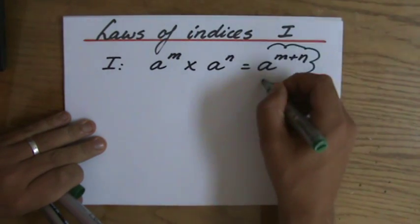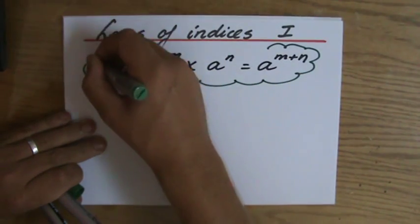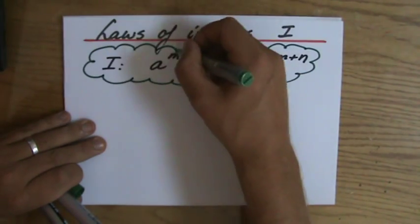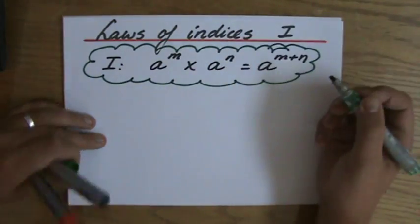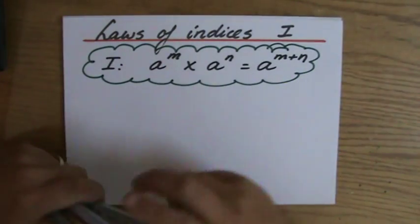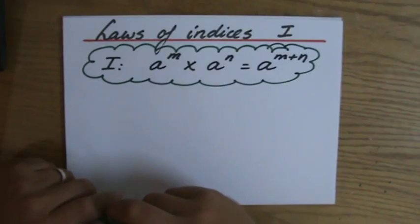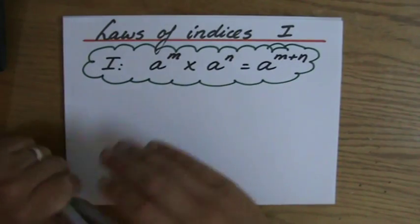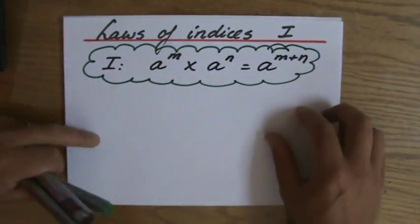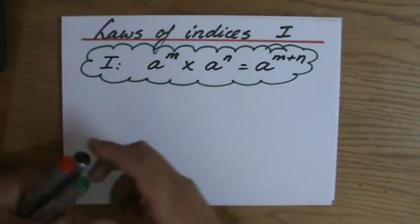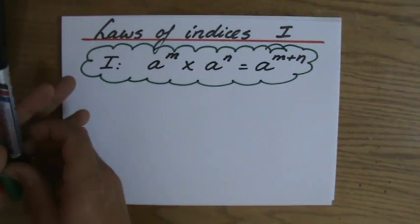But truly, you don't have to remember anything if you understand what you're doing. And 30 years down the line you will still be able to answer these types of questions. Don't get scared of all these A's, M's and N's. Let's have a look at what this means.